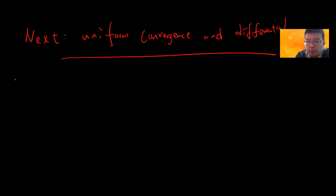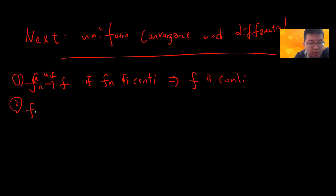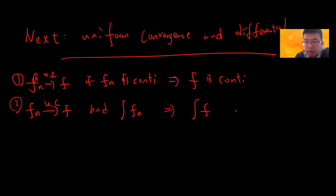So basically we proved two facts. If you haven't seen the video, I will post the link below. The first is that if fn converges to f uniformly, and fn is continuous, then f is continuous — that we already proved. The second is that when fn converges uniformly to f, and each fn can be integrated, then f can be integrated, and you can exchange the limit and the integral.